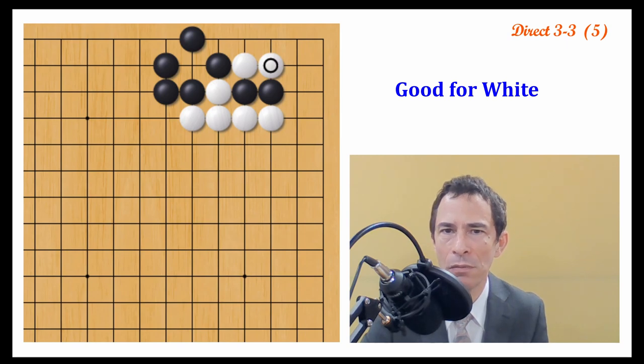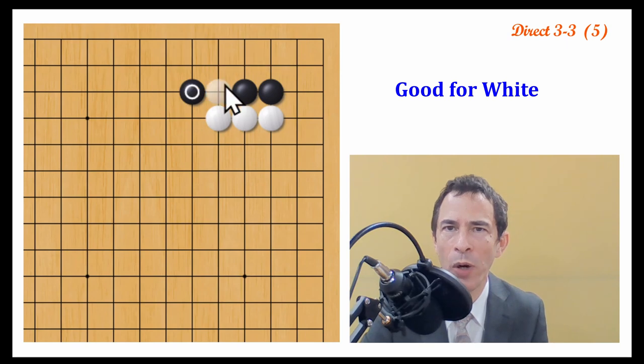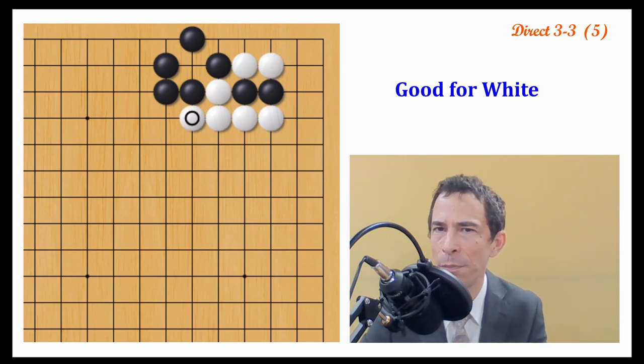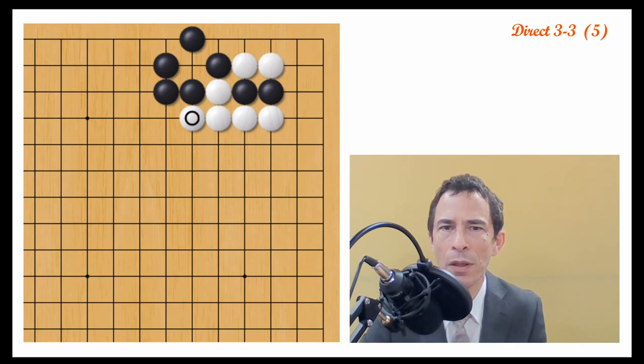when white captures the corner, this result resembles one that I was showing before. When white pushes through and cuts immediately, I was calling this an even result. But if we add a black stone here and a white stone here, obviously, this is going to be better for white. It's going to be an improvement for white.